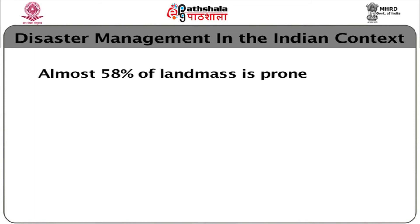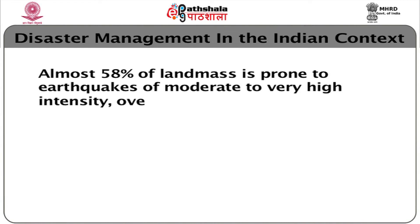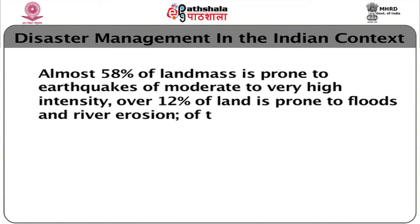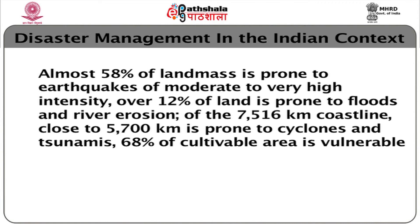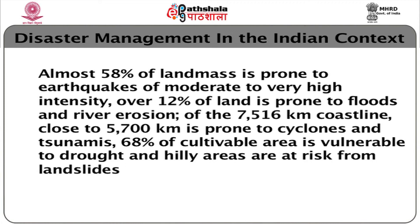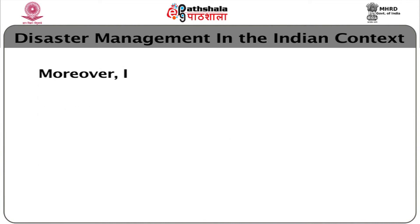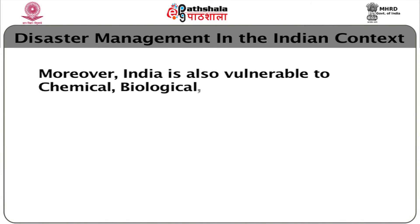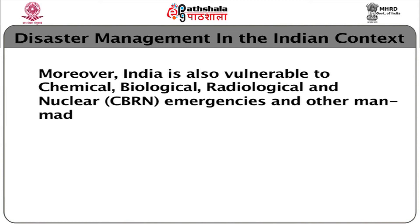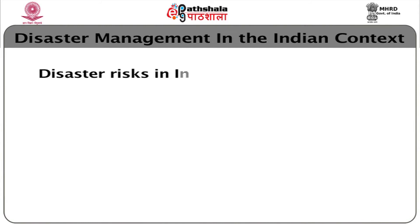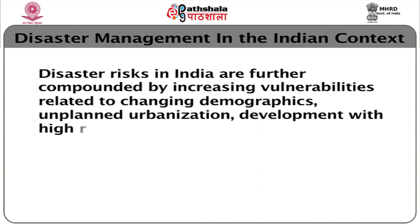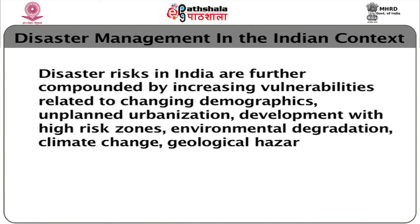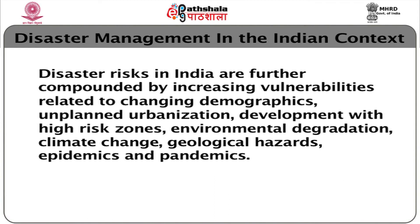Almost 58% of land mass is prone to earthquakes of moderate to very high intensity. Over 12% of land is prone to floods and river erosion. Of the 7,516 km coastline, close to 5,700 km is prone to cyclones and tsunamis. 68% of cultivable area is vulnerable to drought, and hilly areas are at risk from landslides and avalanches. Moreover, India is also vulnerable to chemical, biological, radiological and nuclear (CBRN) emergencies and other manmade disasters. Disaster risks in India are further compounded by increasing vulnerabilities related to changing demographics, unplanned urbanization, development in high-risk zones, environmental degradation, climate change, geological hazards, epidemics and pandemics.